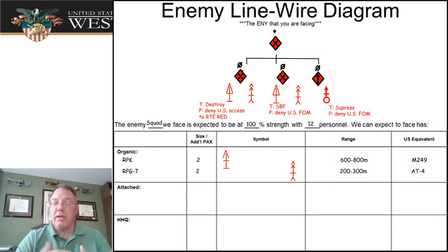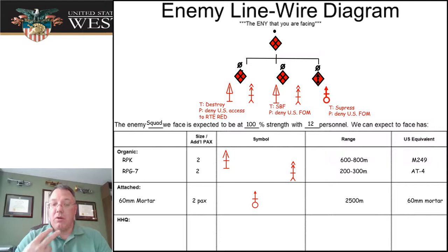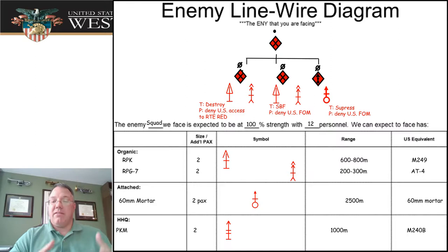We also include US equivalents so younger soldiers we work with have some idea of what we're talking about — like, what's this RPG-7 thing? It's like an anti-tank rocket launcher, like an AT4. And then attached weapons: this enemy has a 60-millimeter mortar attached to them, which brings along two additional personnel, adds to the size of their force, and has a pretty good range.